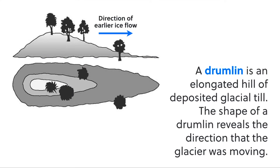Oftentimes glaciers will leave behind something called a drumlin, which is simply an elongated hill of sediment. Remember, the sediment would be unsorted and unlayered. What's interesting about drumlins is the shape they often take — as the ice goes up and over and moves the sediment, you end up with this teardrop-shaped hill.